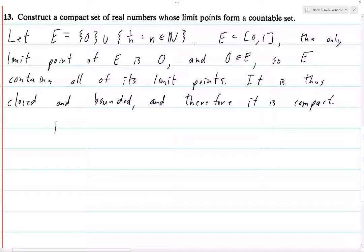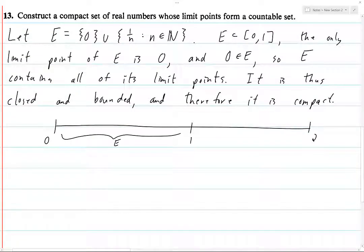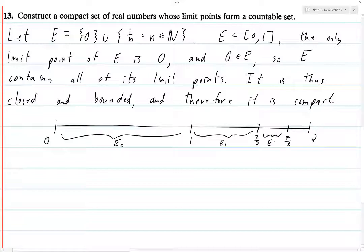Let's draw a number line from 0 to 2, with 1 in the middle. E is contained in the interval from 0 to 1 — we'll call this E zero, or K zero. We want to take E, translate it and squish it to fit in the interval from 1 to 3/2 — call this K one. Then from 3/2 to 7/8 — actually 7/8 of the way to 2 — we put K two, which is E squished into that interval.